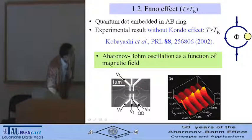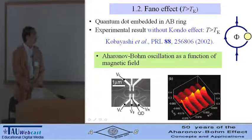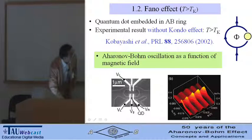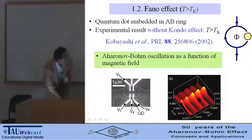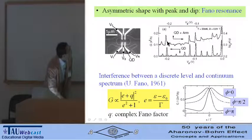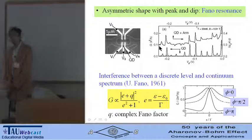Then, fixing the magnetic field and changing the gate voltage, they observed a symmetric shape with peak and dip, so-called Fano resonance.